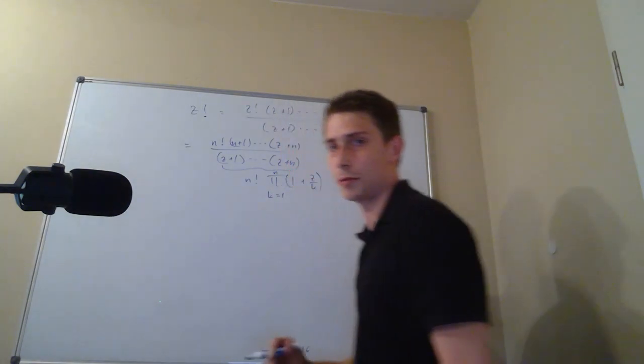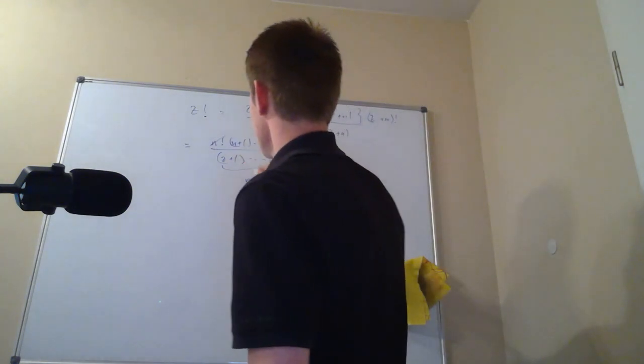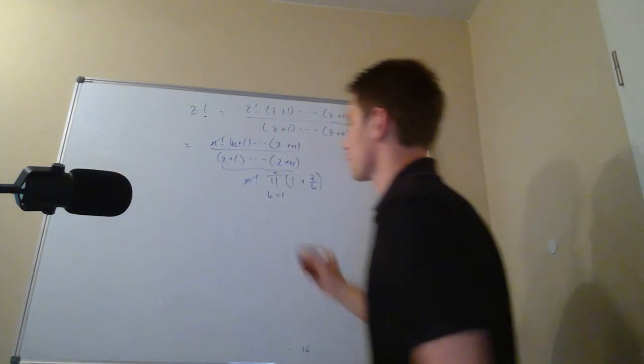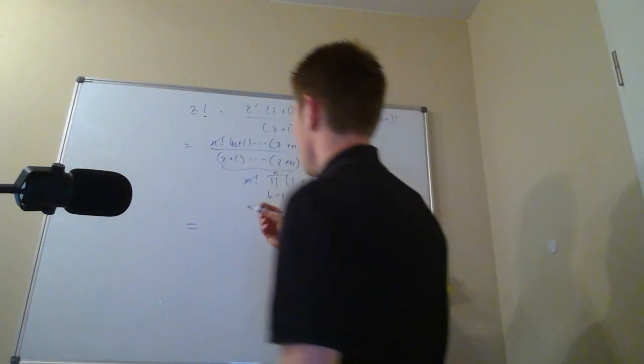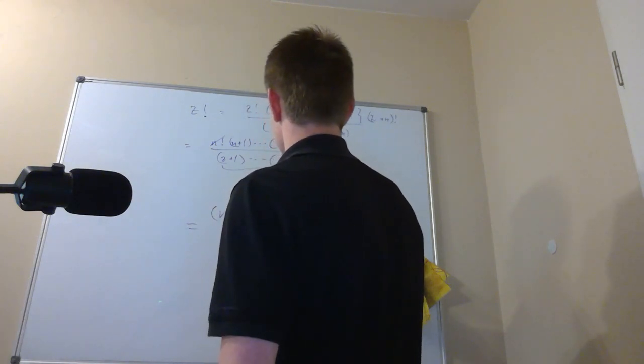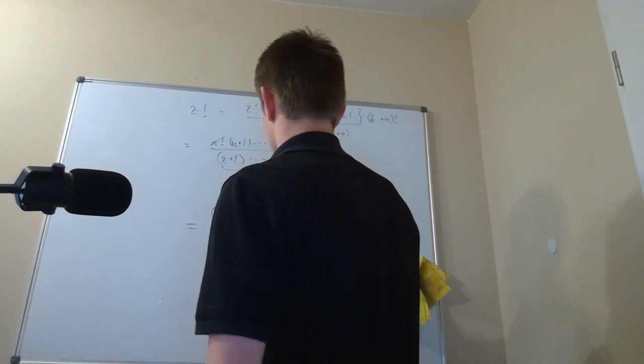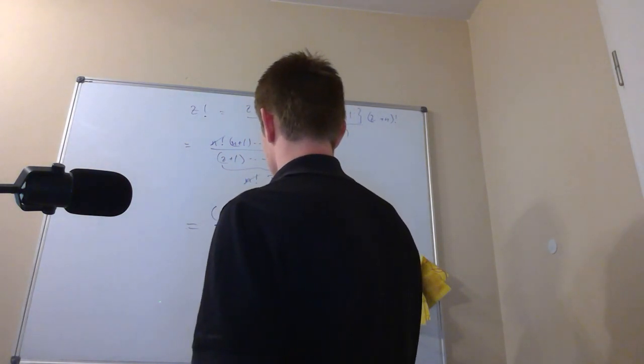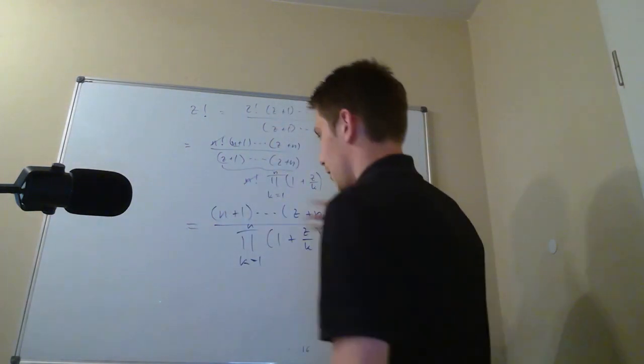I hope you can see where this came from. This was part of my video today. So n factorial and this is going to cancel out in the limit. So what we are ending up with is actually nothing but, at the moment n plus one times dot dot dot z plus n over this product that we have right here. I hope I'm not doing any mistakes right now. It's a bit improvised actually.